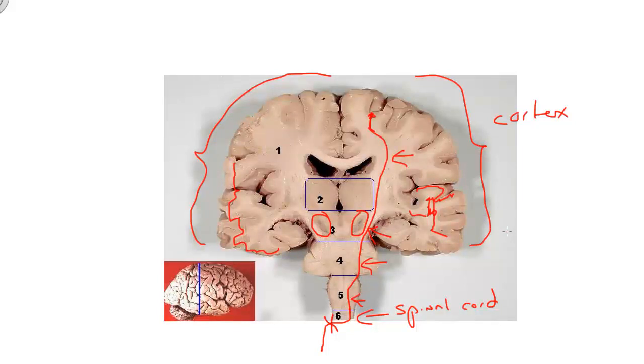What have you got? Collections of neurons that look dark, and they are. It's called the substantia nigra.